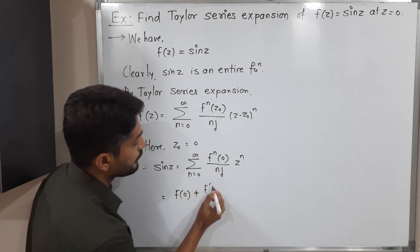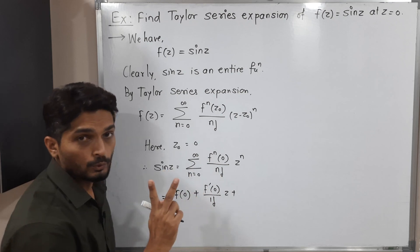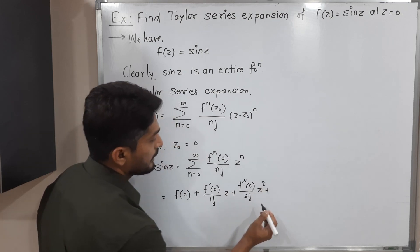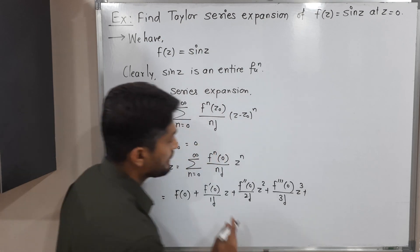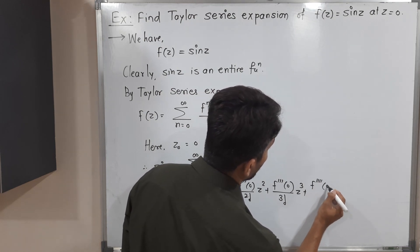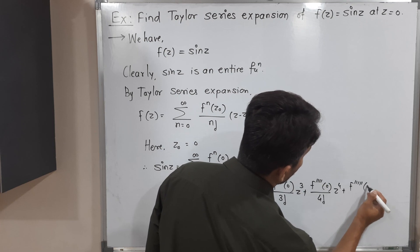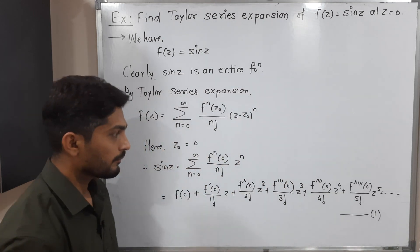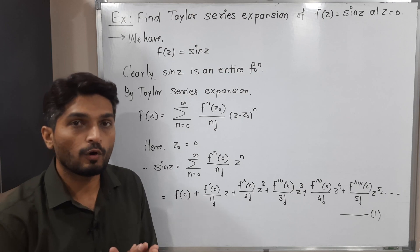Putting n=1: we get the first derivative of f at 0, upon 1 factorial, times z. Putting n=2: the second derivative at 0, divided by 2 factorial, times z squared. Then the third derivative of f(0) upon 3 factorial times z cubed. Continuing: fourth derivative at 0 upon 4 factorial times z to the 4, and fifth derivative at 0 upon 5 factorial times z to the 5, and so on. This is equation number 1. Our task is now to find all those derivatives and substitute their values.